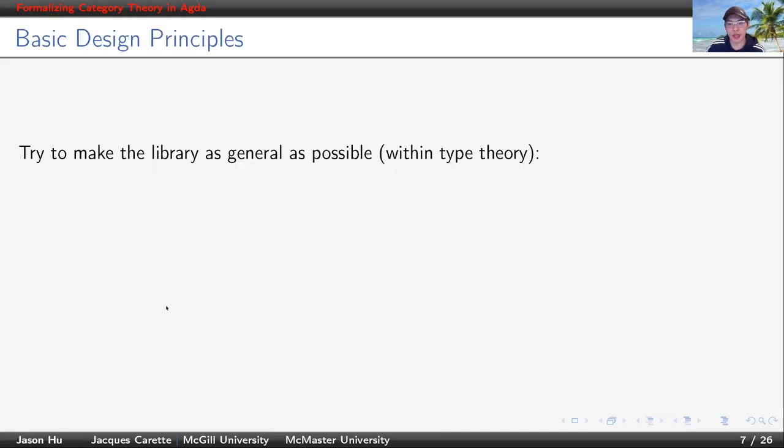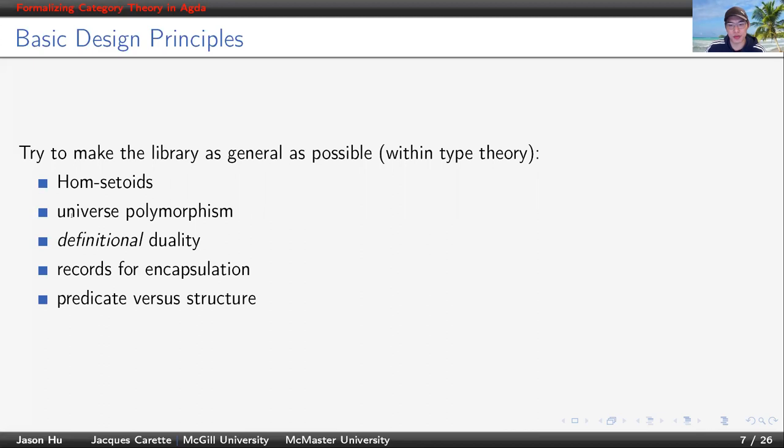In order to make our library as general as possible, we employed the following design principles: hom-setoids, universe polymorphism, definitional duality, records for encapsulation, predicate versus structure. Let's look into each of them.